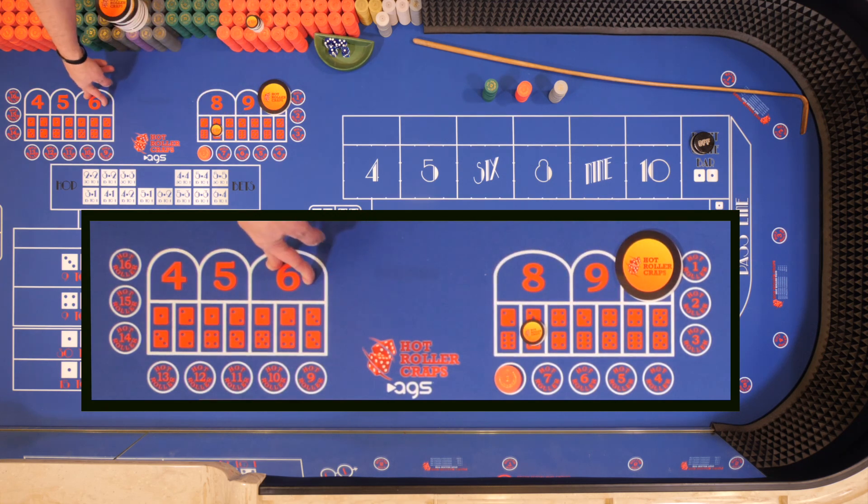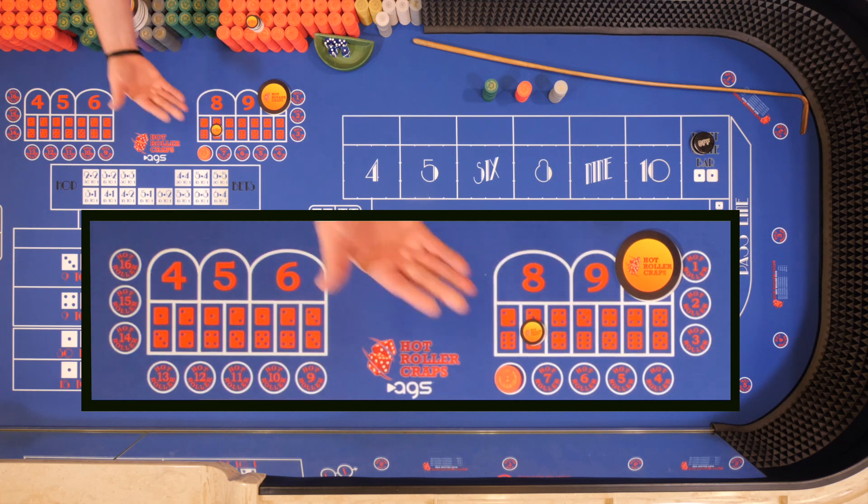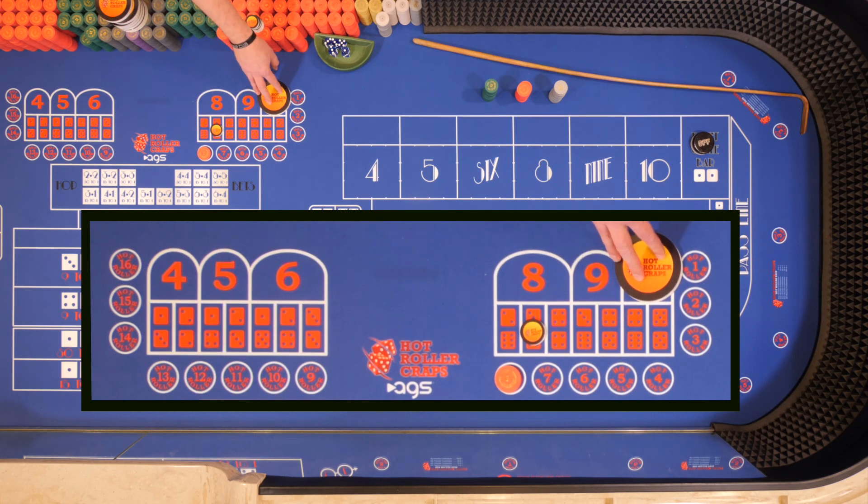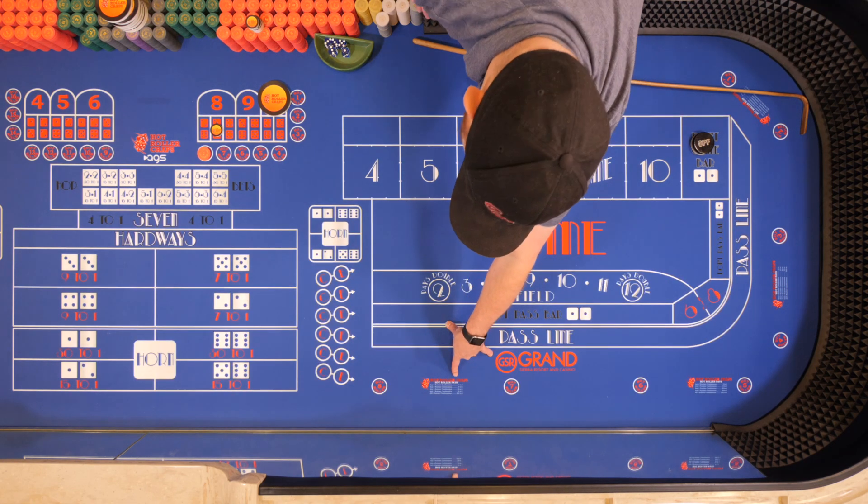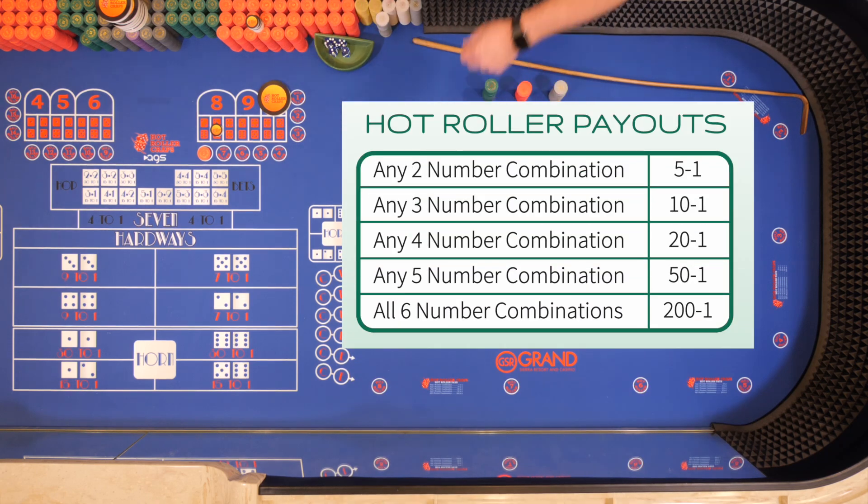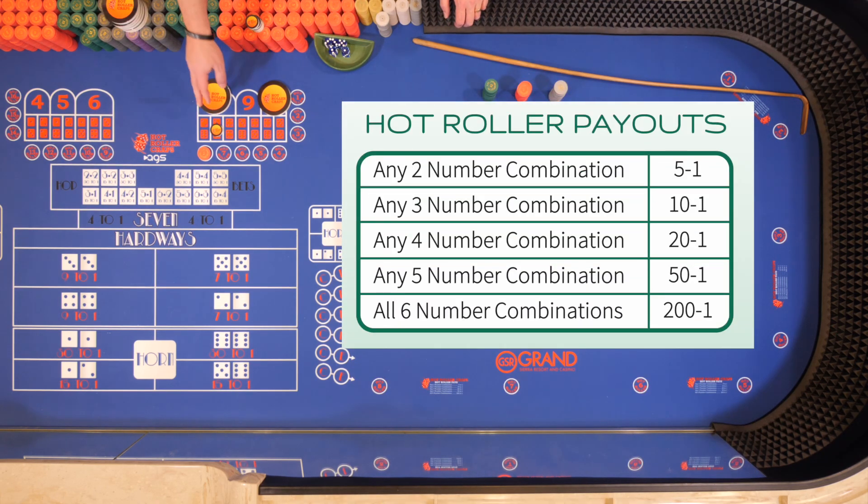You want to roll another number that has all the combinations included. Once you get to 2 number combinations, that's when the payoffs start. Once you hit 2 combinations, 2 numbers are marked, you get 5-1. 3 combinations is 10-1, 20-1, 50-1. And if you can roll all the combinations for all 6 numbers, it pays out 200-1. So if we make a $25 bet and hit all the dice combinations, that's a $5,000 payoff. Not too shabby.